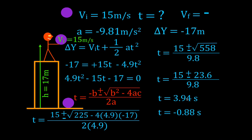To summarize the steps: we wrote down all of the variables, filled in what we knew, identified what we were looking for, chose the correct kinematic equation, plugged the values in, used the quadratic formula, and solved for time — getting the correct answer with proper units. Watch your steps and watch your negative signs when using the quadratic formula.